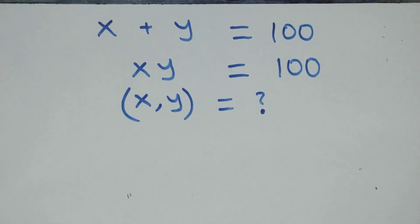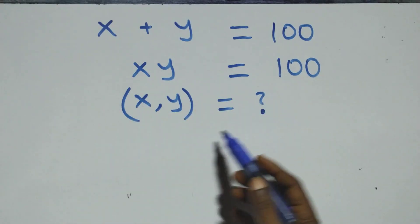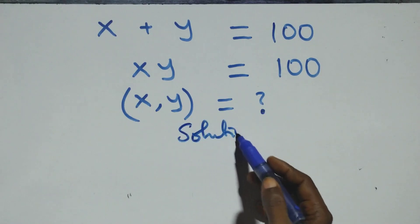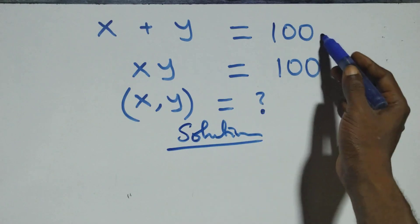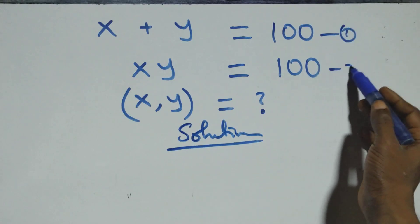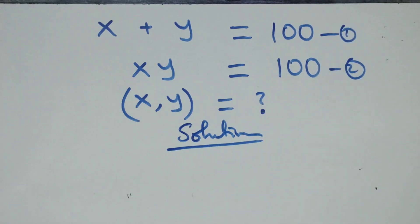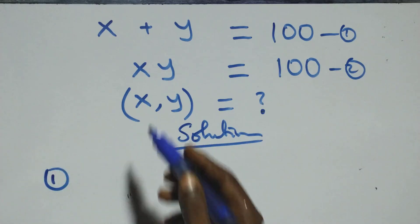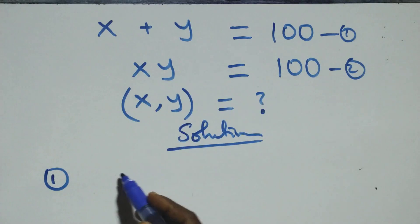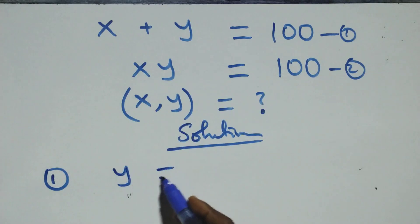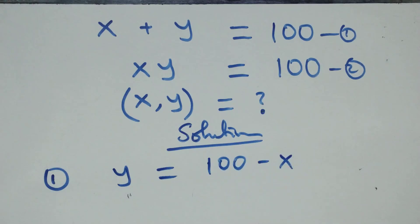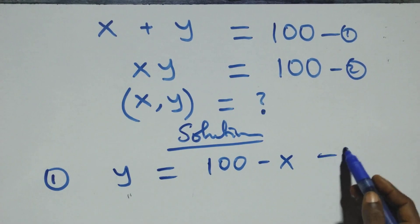Hello, you are welcome. We have a simultaneous algebra equation here. From here we can label this as equation one and this as equation two. From equation one we make y the subject and take x to the other side, which implies we have y equals to 100 minus x. We label this as equation three.